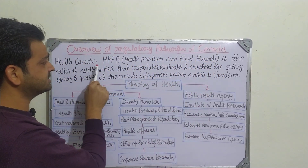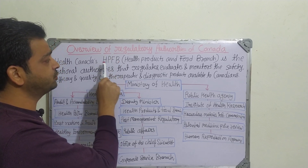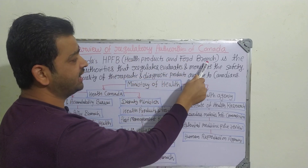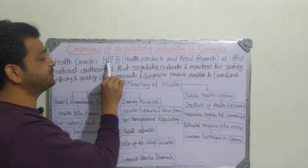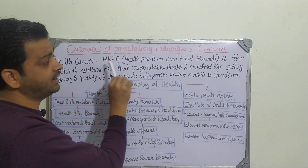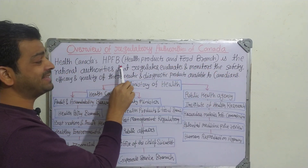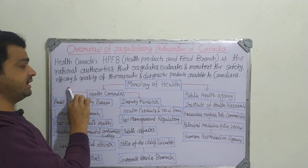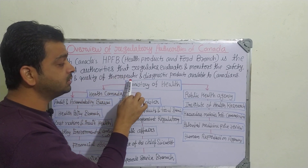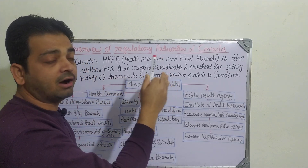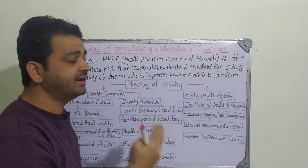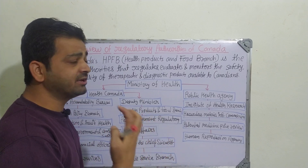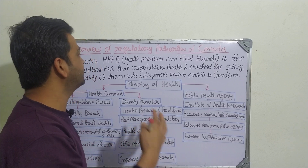The key term here is Health Canada's HPFB — that is, the Health Products and Food Branch. HPFB is the national authority that regulates, evaluates, and monitors the safety, efficacy, and quality of therapeutic and diagnostic products available to Canadians. Whatever food or drug items are available in Canada, this authority will regulate, evaluate, and monitor them.